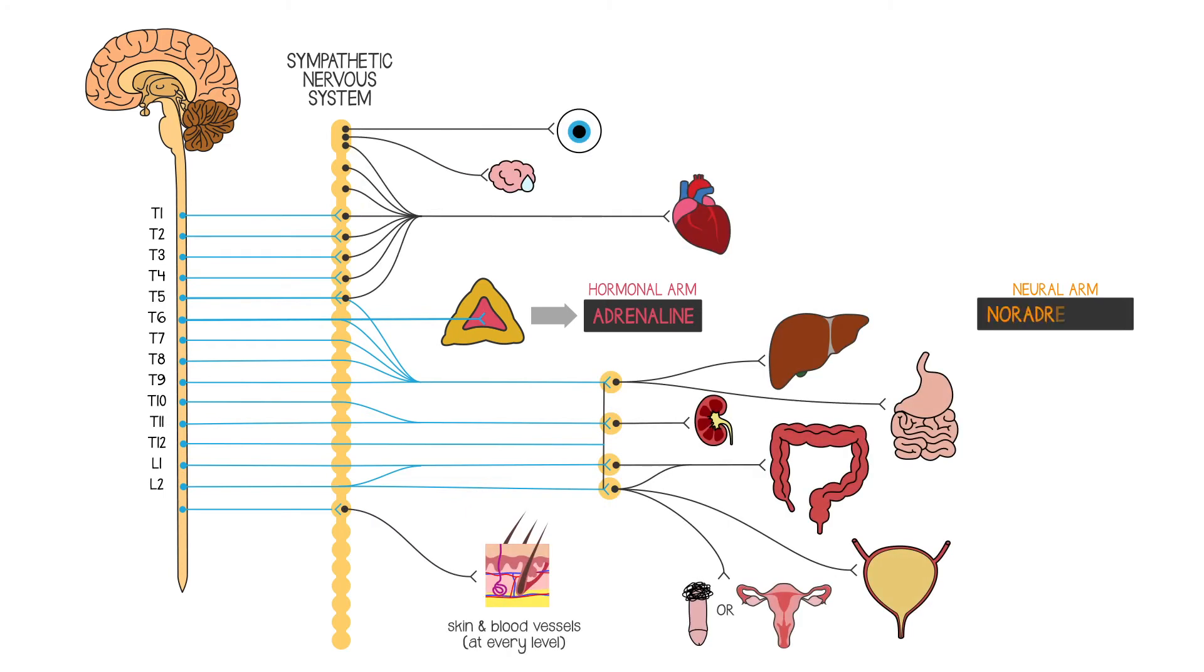Those other nerve fibers release noradrenaline, or norepinephrine if you're American, directly onto the target cells. So noradrenaline is a neurotransmitter, while adrenaline from the adrenal medulla is a hormone.